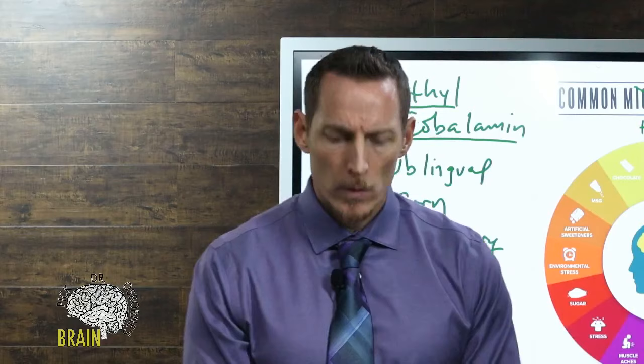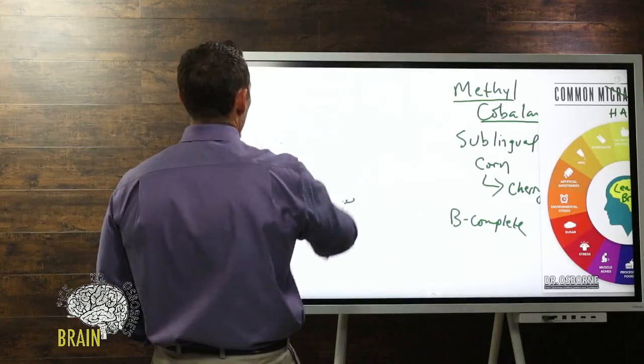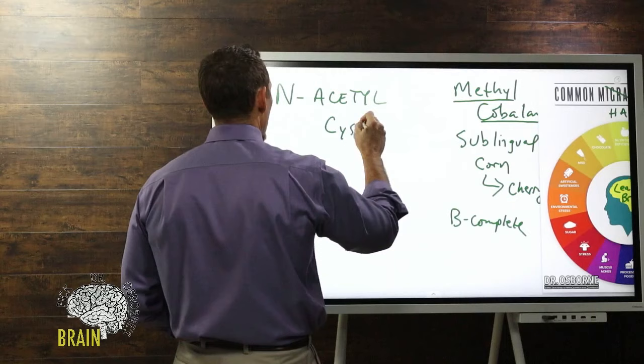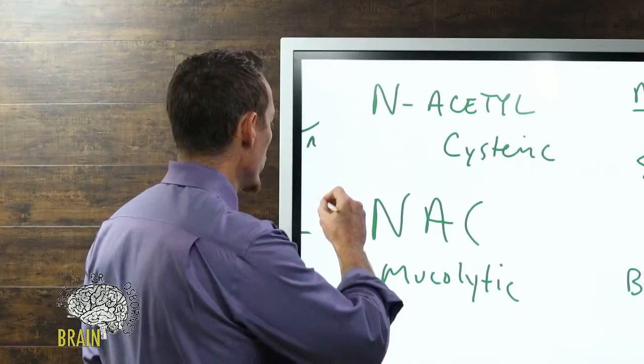Someone asks the best way to clear mucus. A great natural option is NAC — N-acetylcysteine. It's an excellent mucolytic that helps clear out mucus really well. It's a dietary supplement available over the counter. I have a product called Ultra NAC that's very effective for mucus.